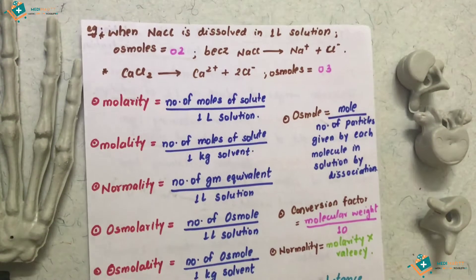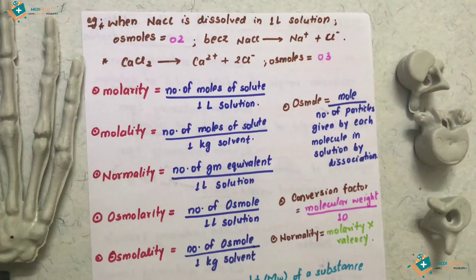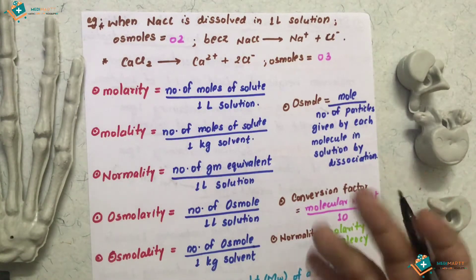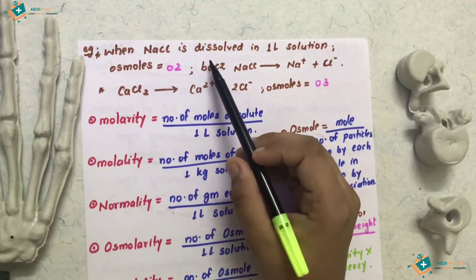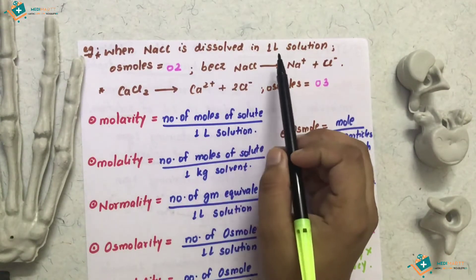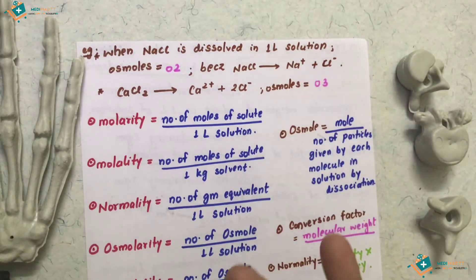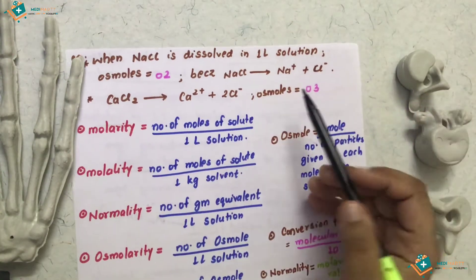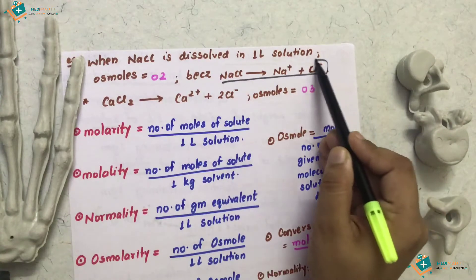If you have any substance, we are saying that Osmol or osmotic active substance refers to particles in 1 liter of water solution. For example, if you have NaCl — sodium chloride — dissolved in 1 liter of solution, we need to calculate the Osmol. When NaCl dissolves, it also dissociates.